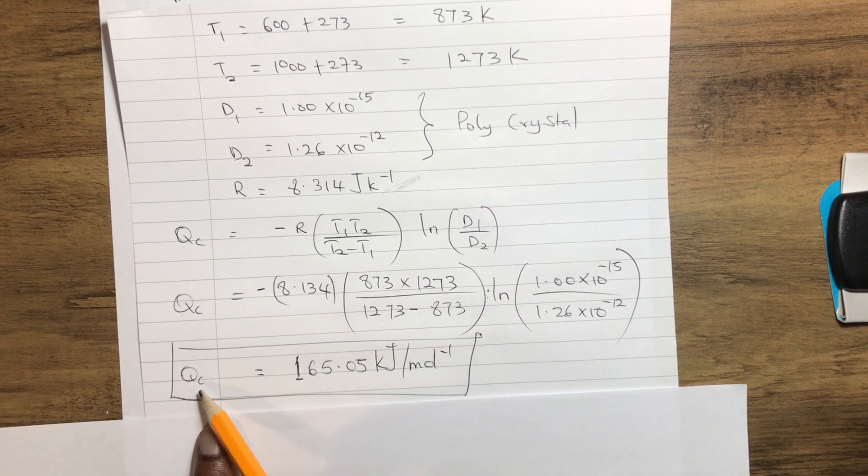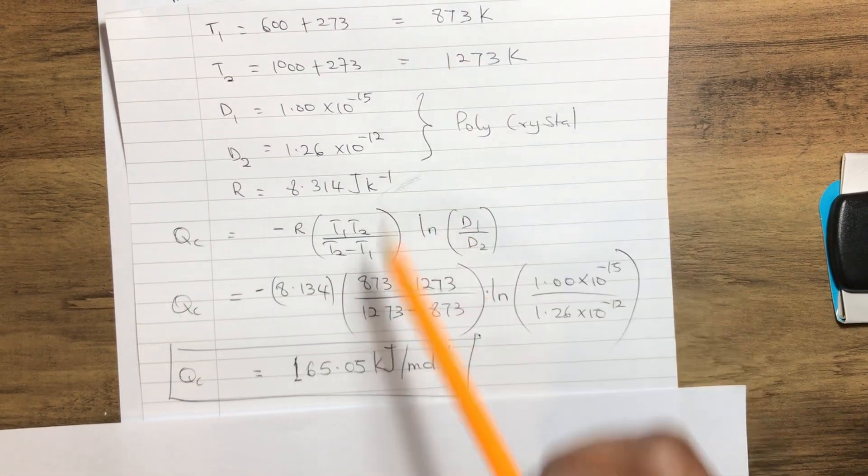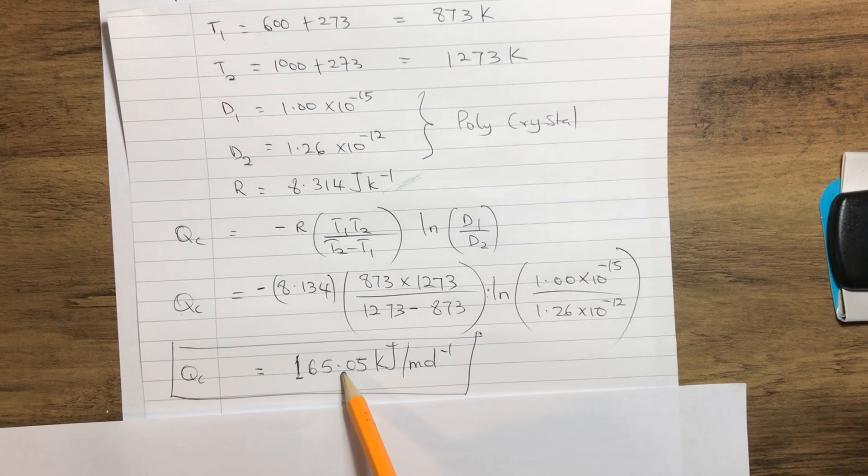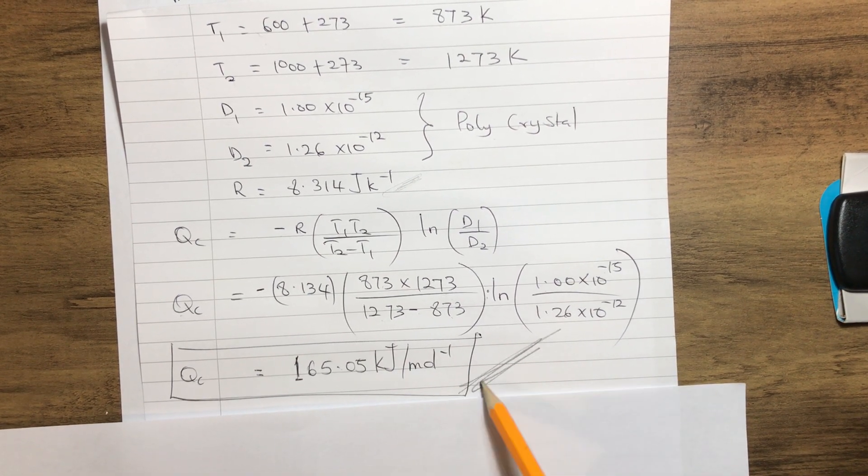Once again, the activation energy for the polycrystal is 165.05 kilojoules per mole.